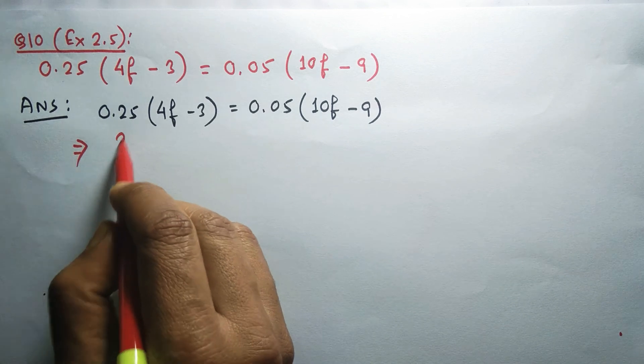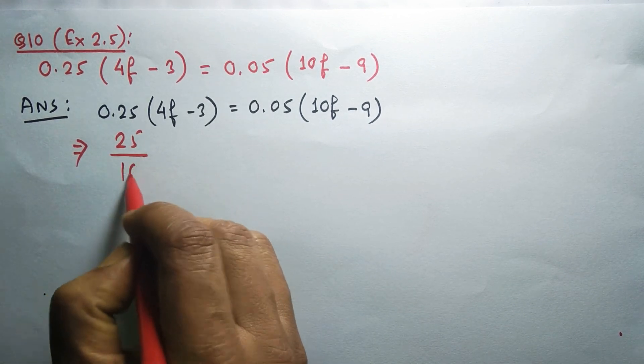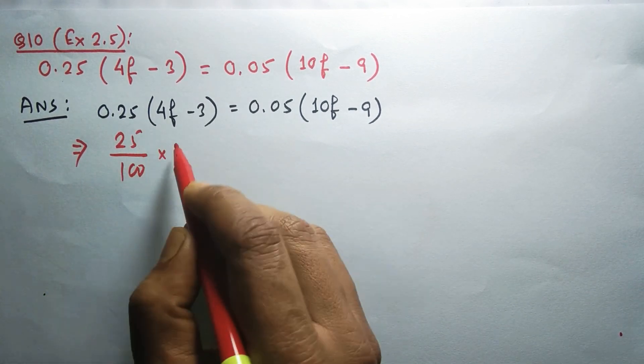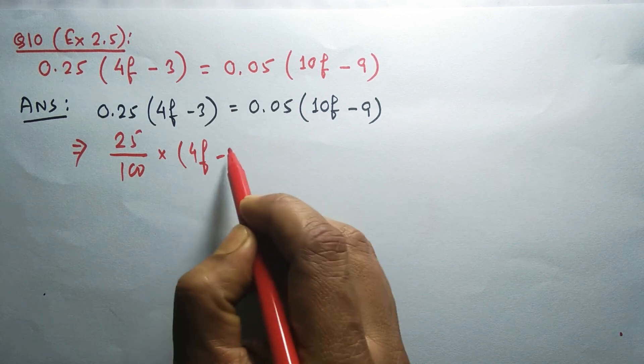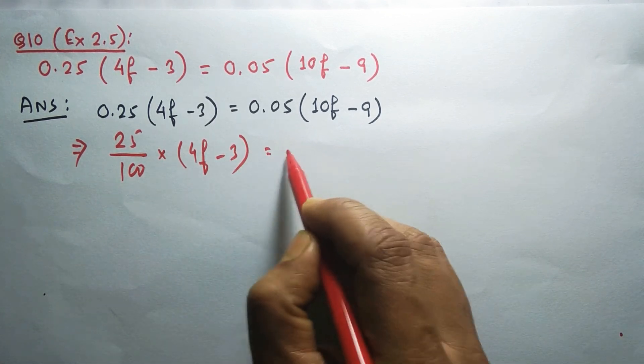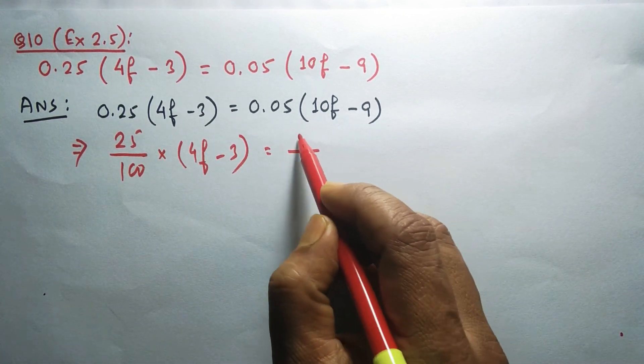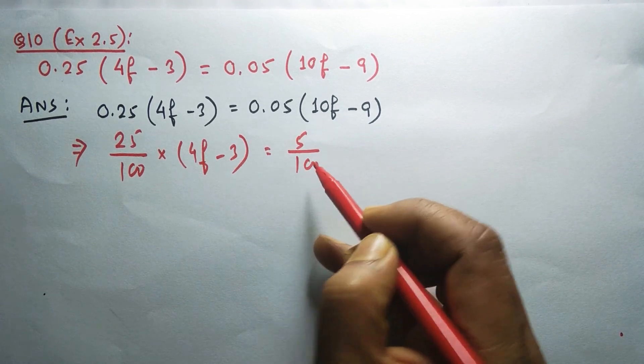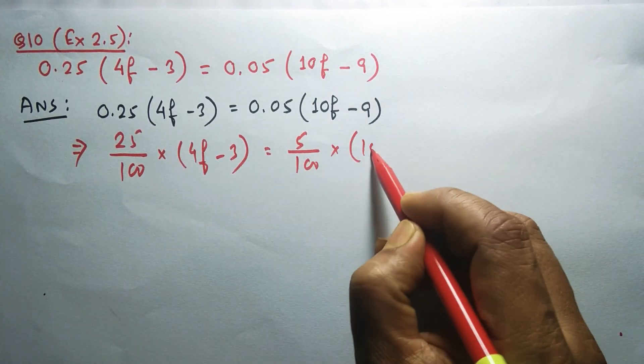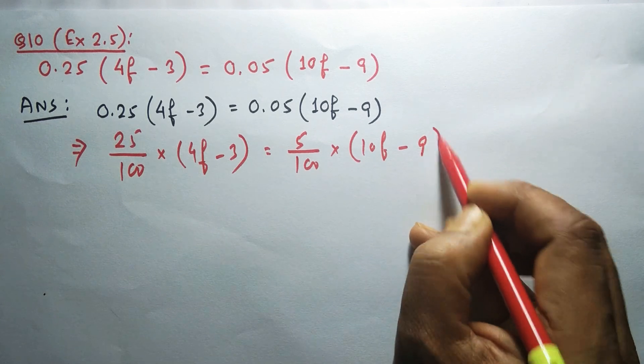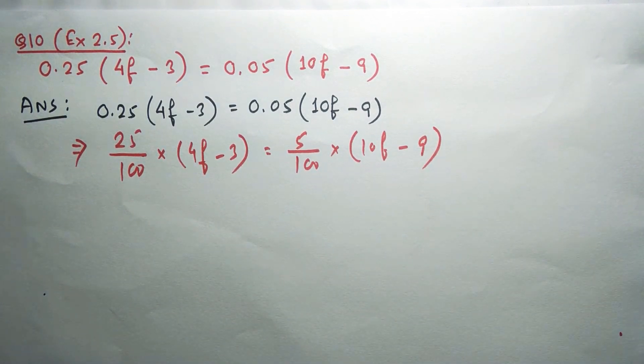0.25 means 25 by 100 into 4f minus 3, equals 0.05 means 5 by 100 into 10f minus 9. So I converted these decimal numbers into fraction numbers.